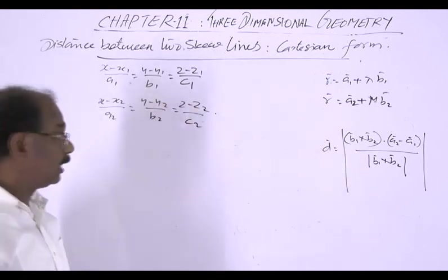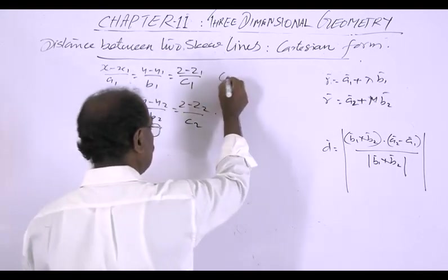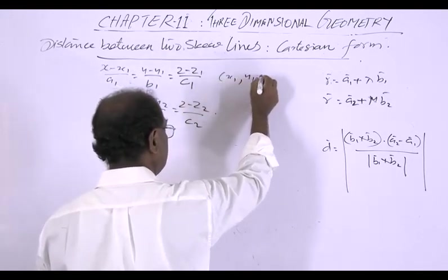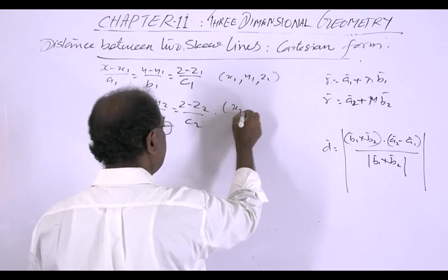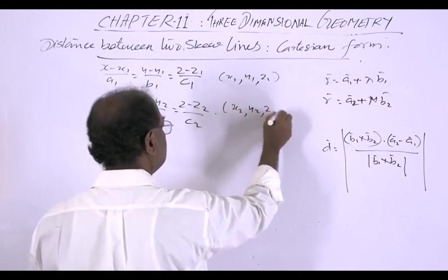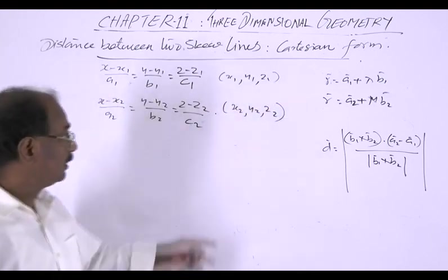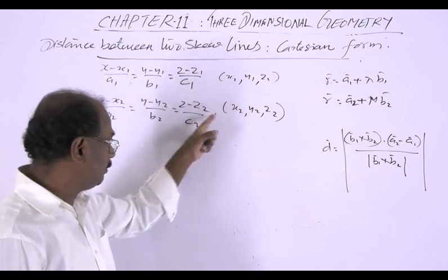These two lines will pass through the points. First line passes through the point x1, y1, z1 and the second line passes through x2, y2, z2.